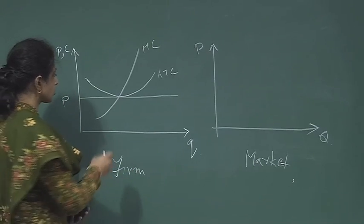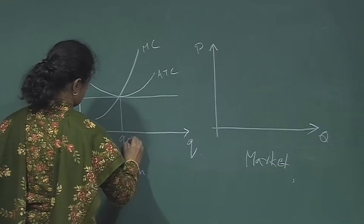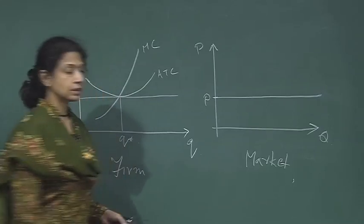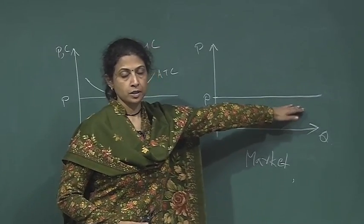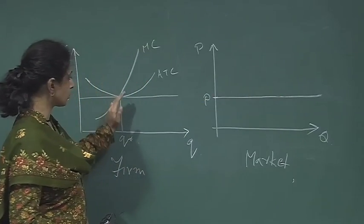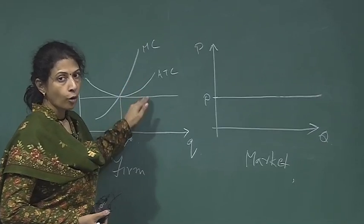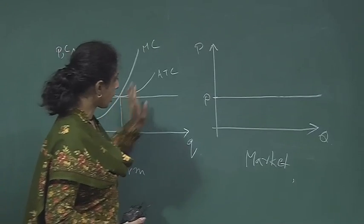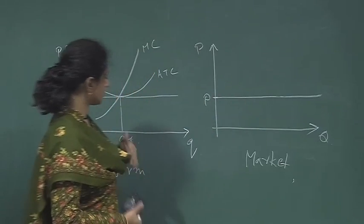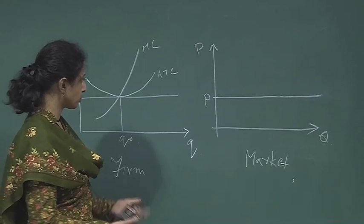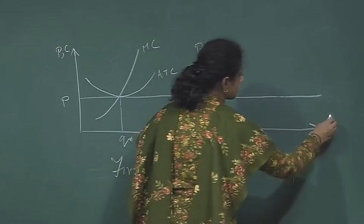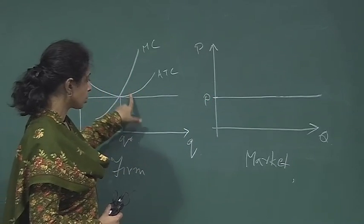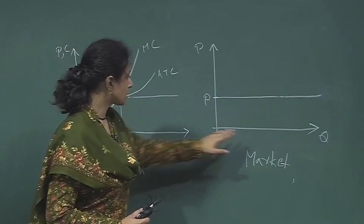This is the situation for all the firms in the market. At this price the supply in the market is basically a horizontal supply curve for the market. The long run supply curve in the market is horizontal because all the firms are exactly similar in the long run; they operate at minimum of their average cost, and minimum of their average cost is equal to the price.